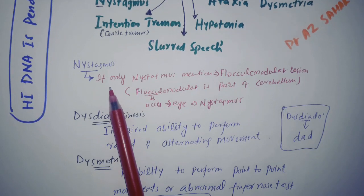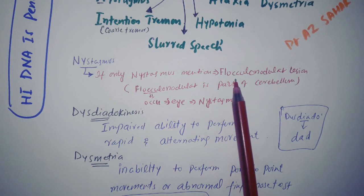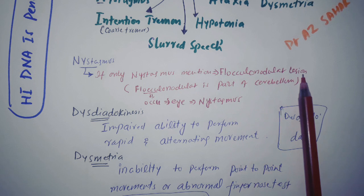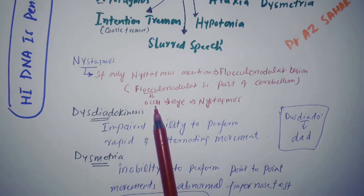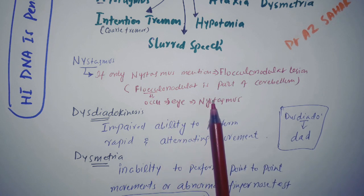Now nystagmus is actually especially which part of the cerebellum, that is flocculonodular lesions. And how will we remember it? If you see here is the word oculo. Oculo is for eye and eye is for nystagmus.